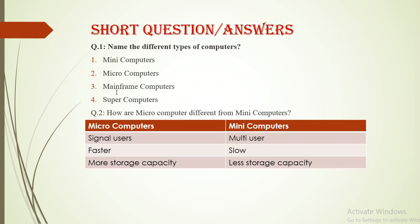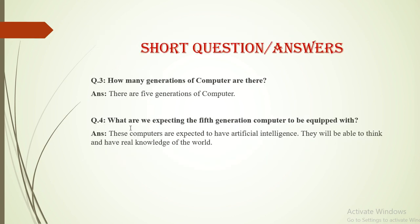These are mini computers, microcomputers, mainframe computers and supercomputers. The next generation of computers will be able to think like humans. The next generation of computers will have artificial intelligence, better storage, and will be much better than the previous four generations. They will be able to work and function in a good way and will be able to think and have real knowledge of the world.